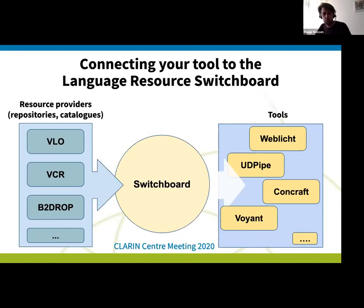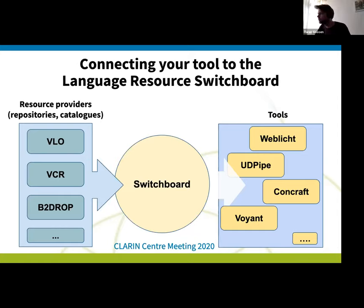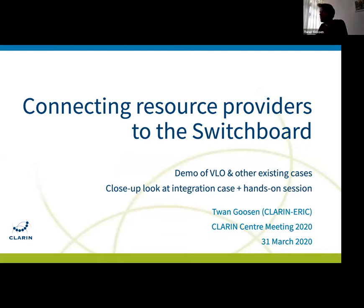Here you can see the switchboard, and the user would transition from left to right — coming from something like the VLO or the Virtual Lecture Registry, which I call the resource provider here. The user goes to the switchboard and then hopefully leaves the switchboard to some tool to do something with the resource. I'm going to talk about the left side of the picture, and then Emmanuel is going to take over and talk about the right hand side — we're both going to explain how to connect your servers or tool to the switchboard.